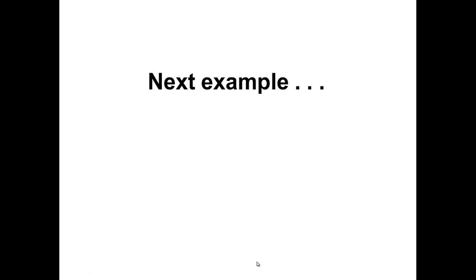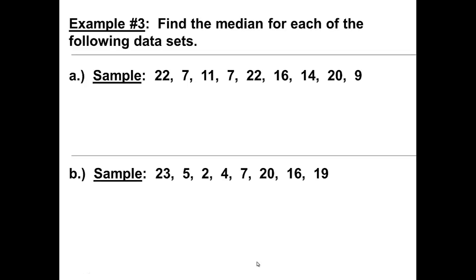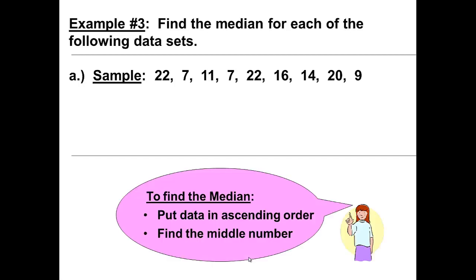We have another example. Example three: find the median for each of the following data sets. Sample A: 22, 7, 11, 7, 22, 16, 14, 29. Remember your definition of the median. To find the median, put the data in ascending order and find the middle number.